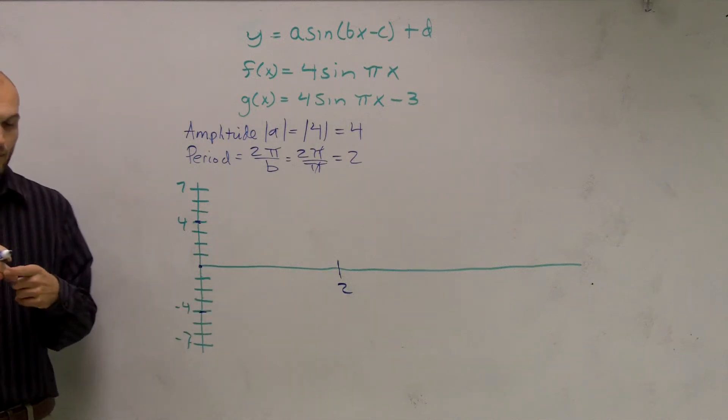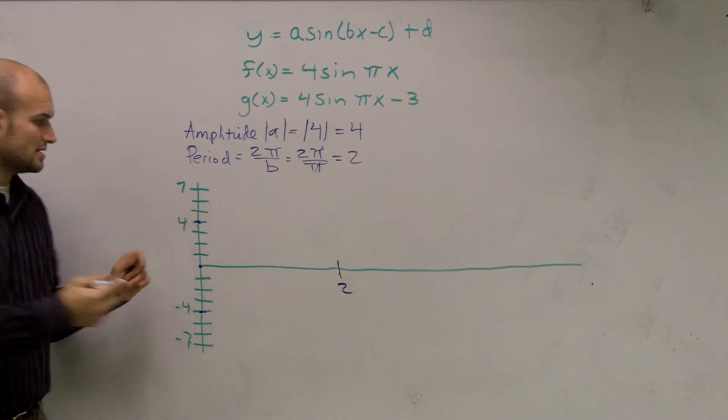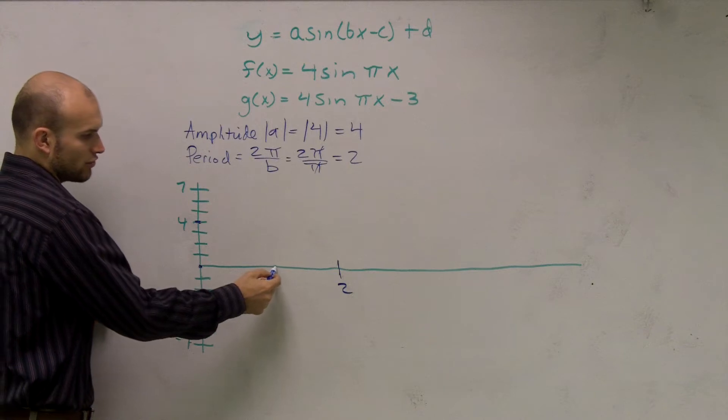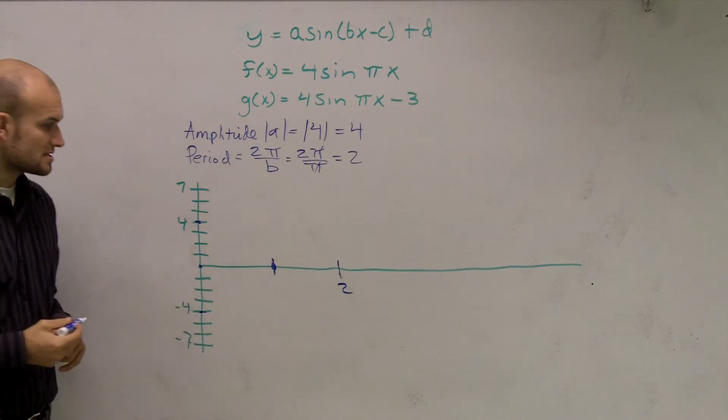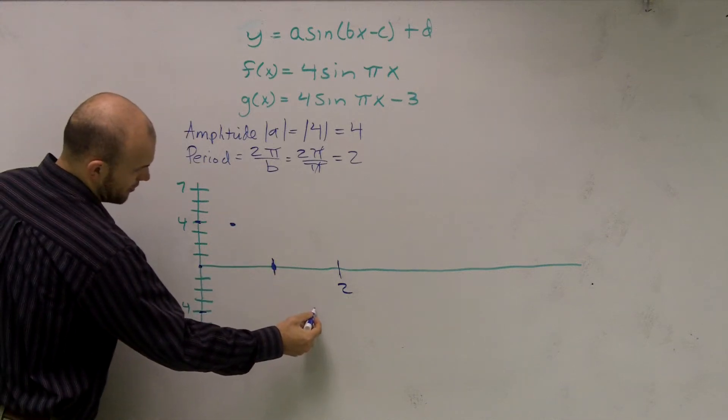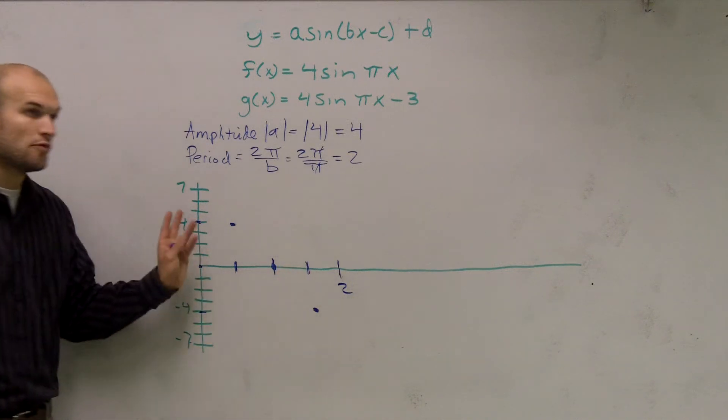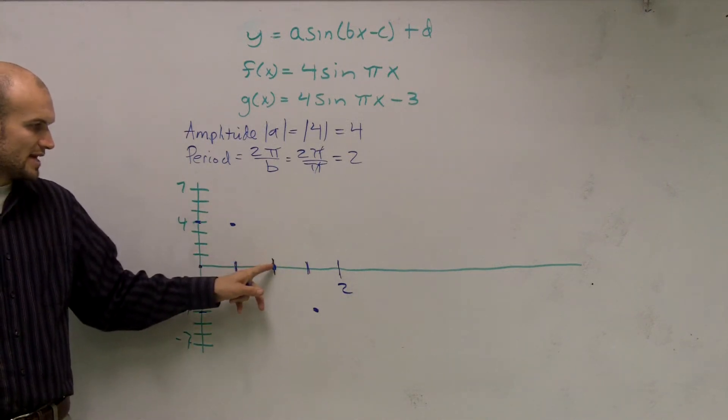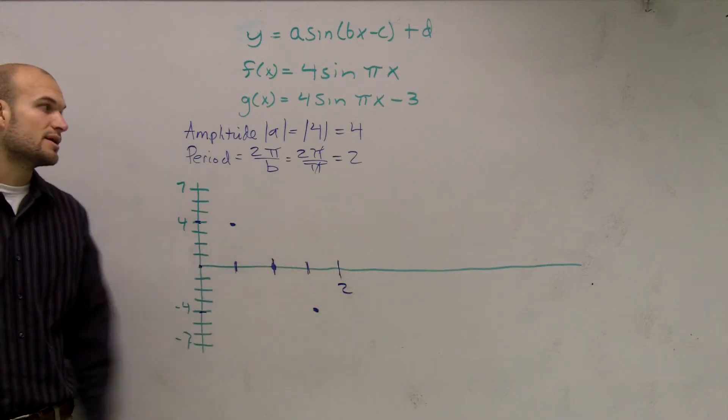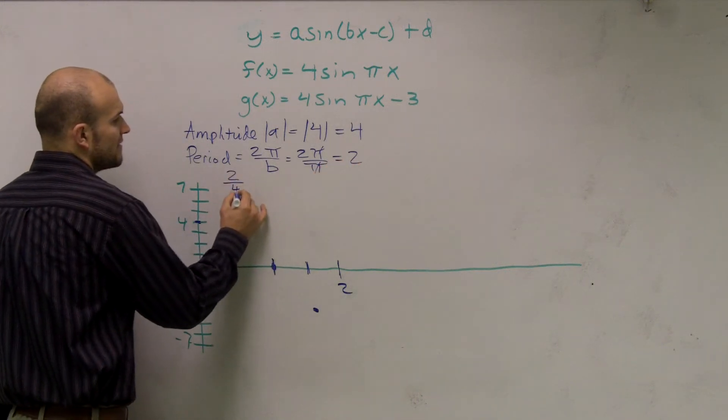Now there's a couple points that we need to remember about a sine function. A sine function has four important points. It has, remember if you can kind of think of it, it goes like this. There's a point where it crosses the x-axis. We have a maximum point and we have a minimum point. So those are what we call very important points. So we have four important points: the max, the intercept, the minimum, and where it ends. So how do we find out those points? What we can do is we can take our period and divide it by four.